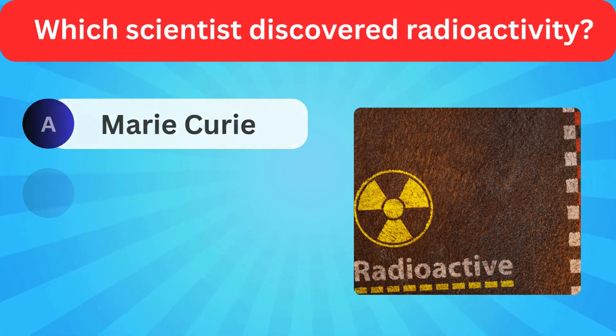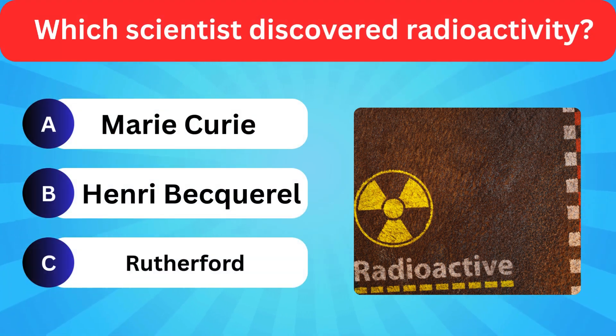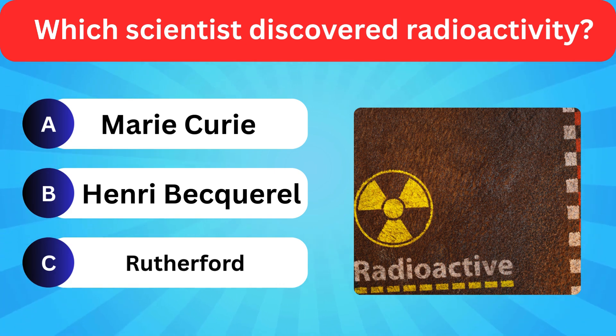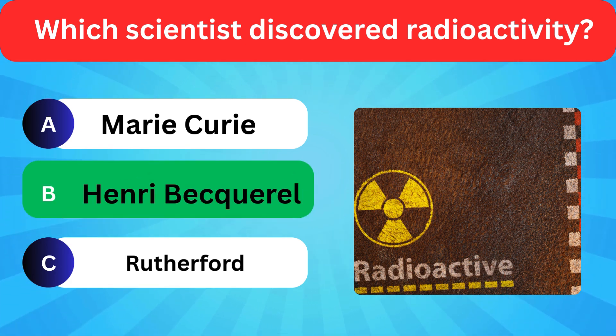Which scientist discovered radioactivity? Options: Marie Curie, Henry Becquerel, Rutherford. Correct answer is Henry Becquerel.